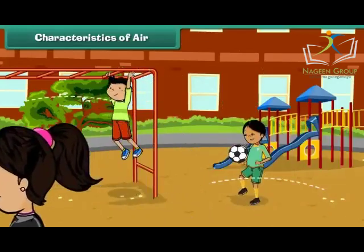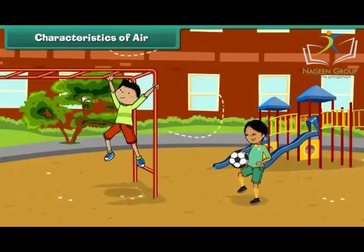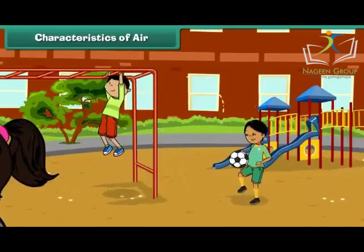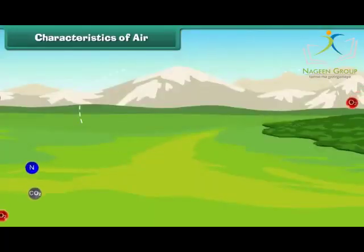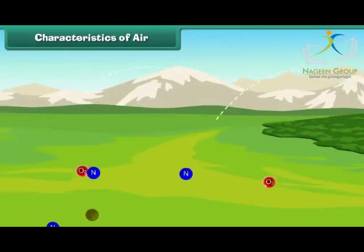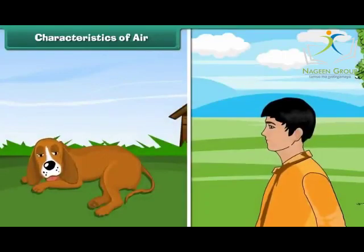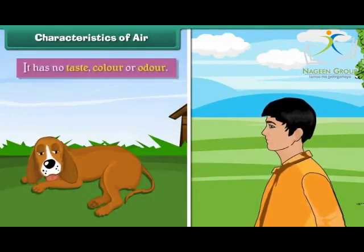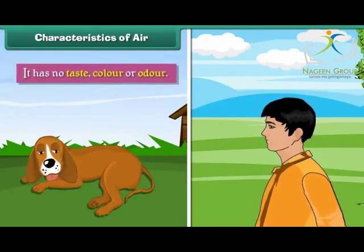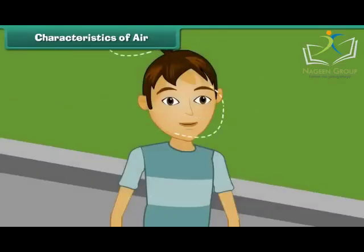Characteristics of Air. We are surrounded by air. Air is a mixture of gases and other particles. It is essential for the survival of living things. All living things breathe in and breathe out air. Air has no taste, color, or odor.